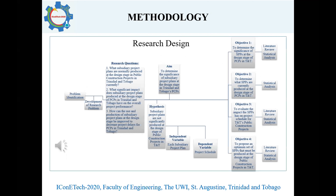We have a chart showing our research design, from problem identification to the development of the research problem and research questions, which give us our hypothesis, aim, and objectives. From the objectives, we determined how we were going to achieve them, whether from data collected in the literature review leading to conclusions, or from statistical analysis done on data obtained from the questionnaire survey.